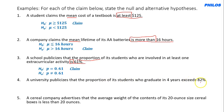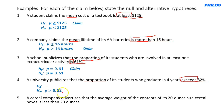Example 4: A university publicizes that the proportion of students who graduate in four years exceeds 82%. 'Exceeds' means greater than (>), a statement of inequality assigned to the alternate hypothesis: Hₐ: p > 0.82. The null hypothesis is the opposite: H₀: p ≤ 0.82. In this case, the claim is the alternate hypothesis.